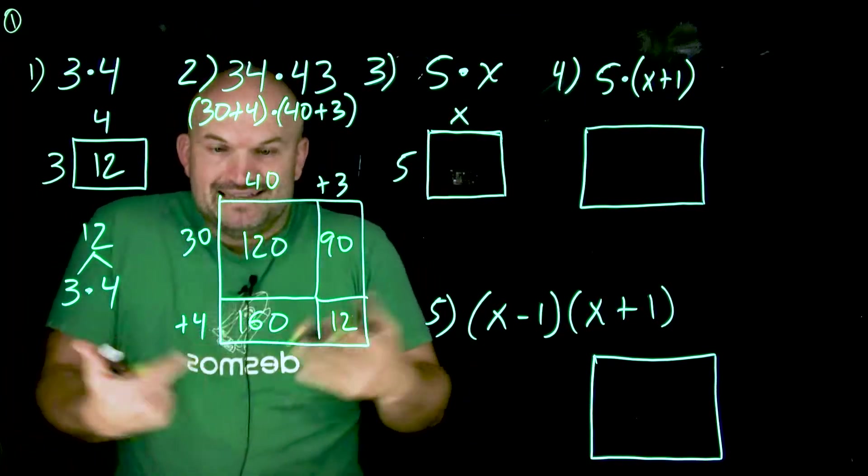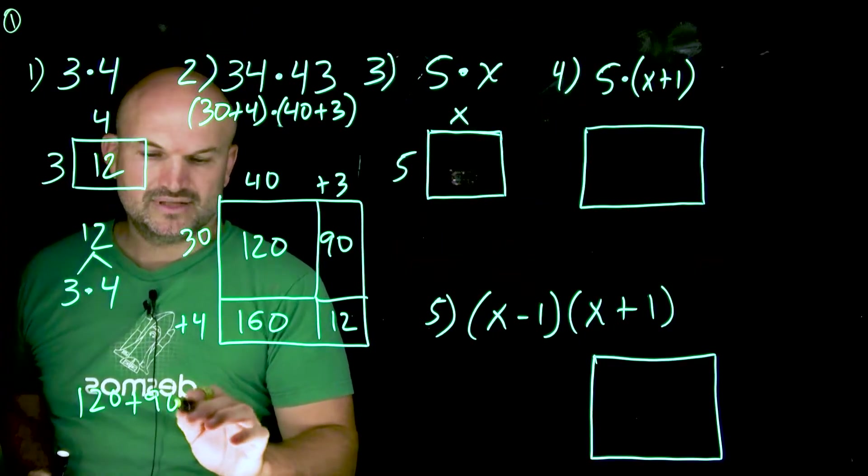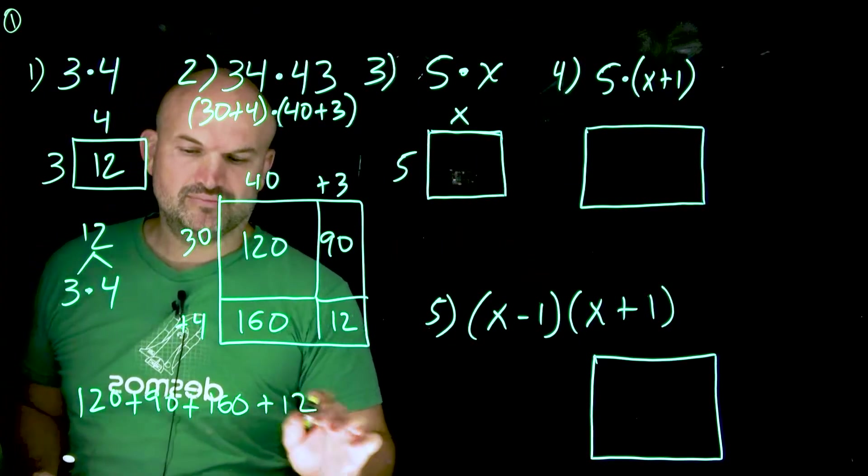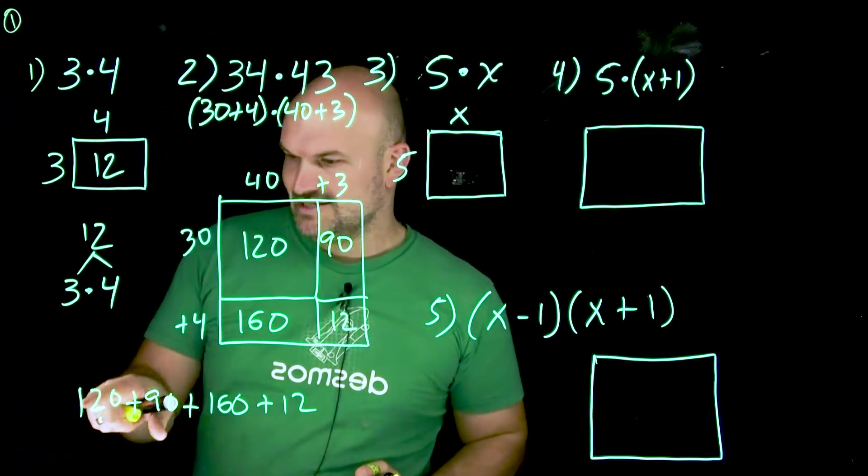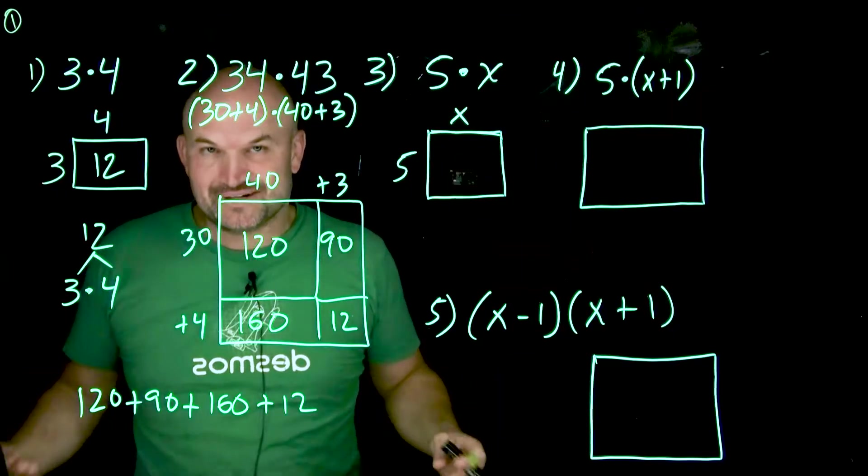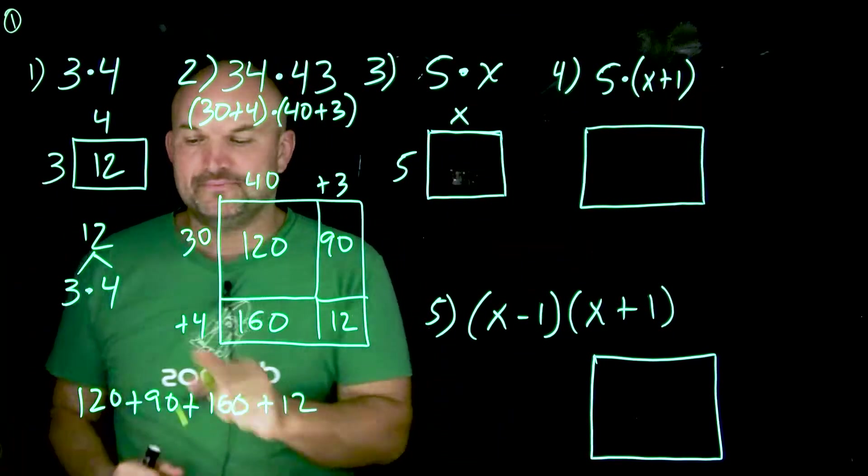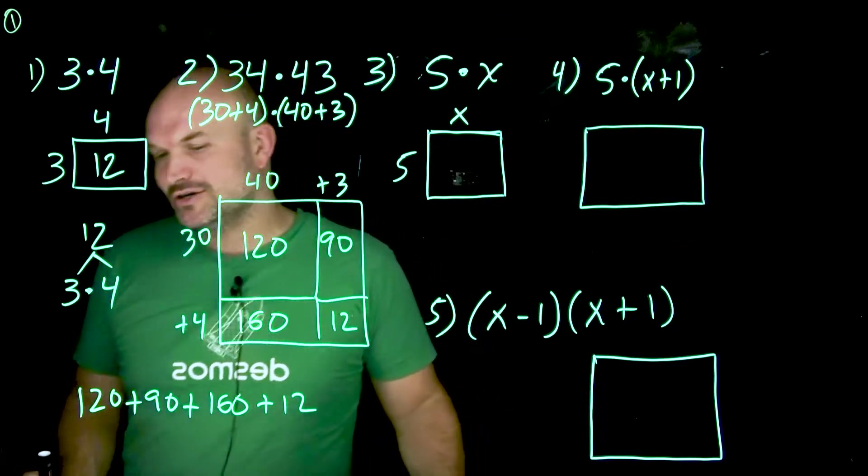So now if I want to find the area of multiplication on this, I can do 120 plus 90 plus 160 plus 12. So let's go ahead and do this. 120 plus 90. And again, doing math in your head is going to be so important for factoring. That's why we're going through some of these examples. I need you to build up this strong foundation. 120 plus 90 is going to be 210.